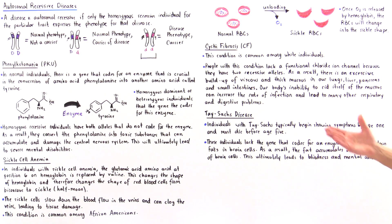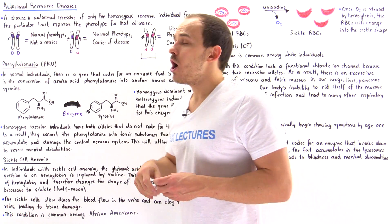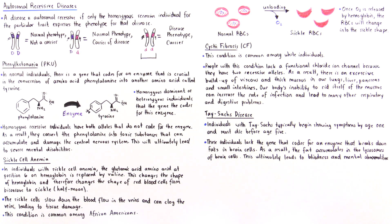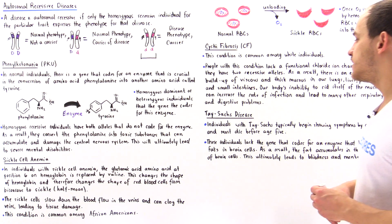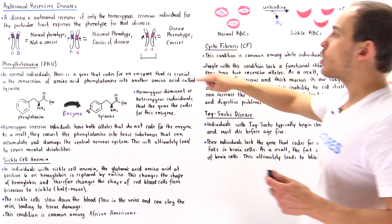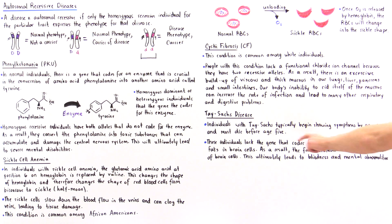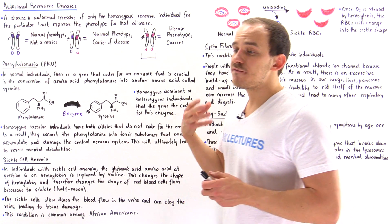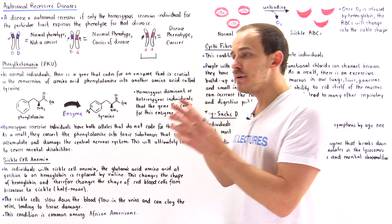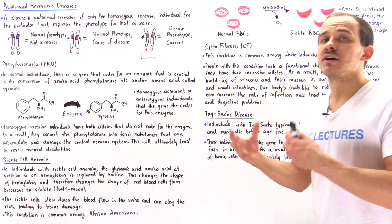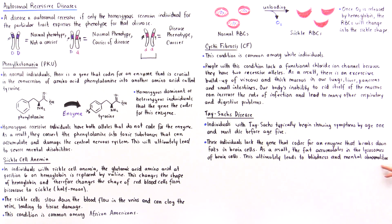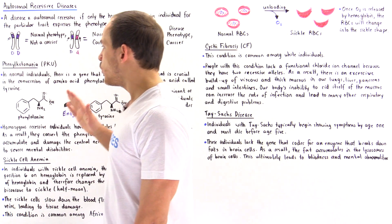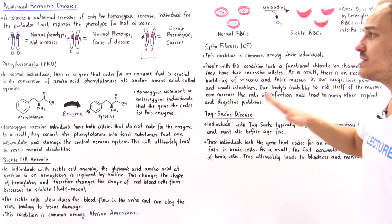Finally, let's look at Tay-Sachs disease, another example of a human autosomal recessive disease. Individuals with Tay-Sachs disease typically begin showing symptoms by age one and usually die before age five — making it a very dangerous type of autosomal recessive disease. These homozygous recessive individuals lack the gene that codes for a special enzyme that breaks down fats in the brain cells. Because those lipids are not broken down properly, they accumulate in the lysosomes of brain cells, eventually leading to problems such as blindness and mental disabilities.